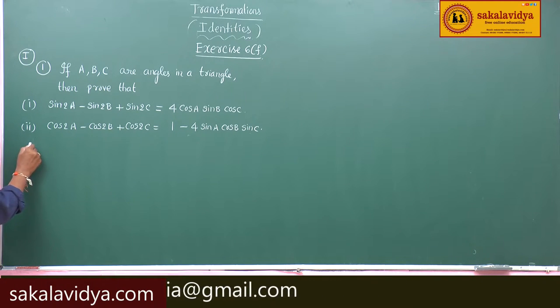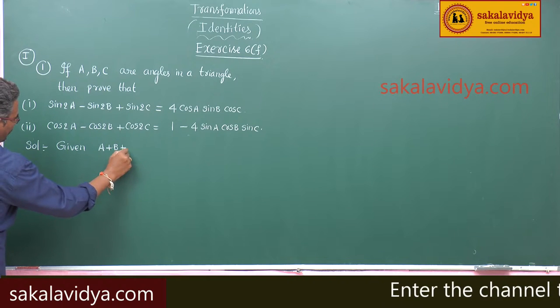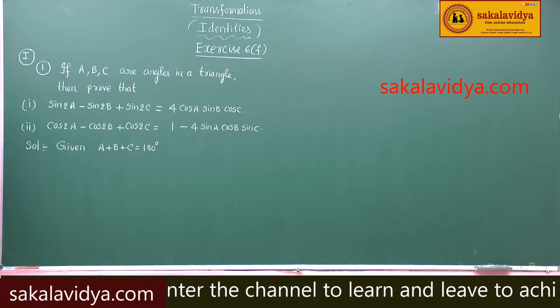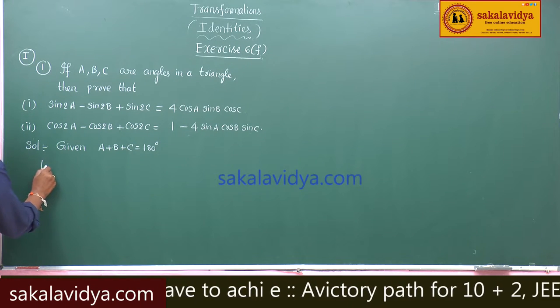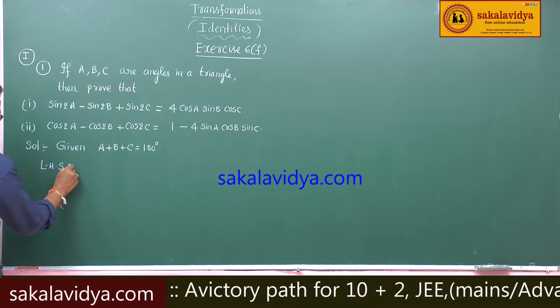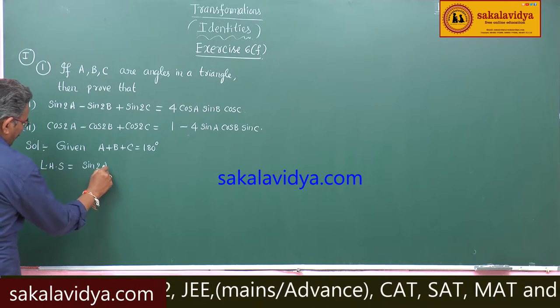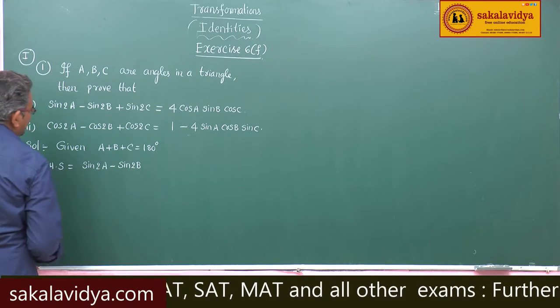Solution: Given A plus B plus C is equal to 180 degrees. Now, left hand side sin 2A minus sin 2B plus sin 2C.